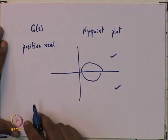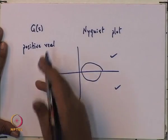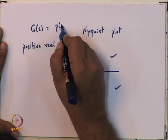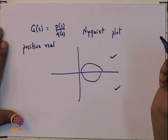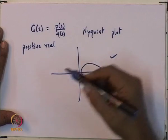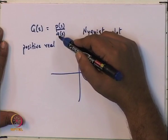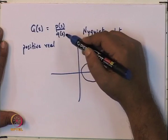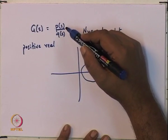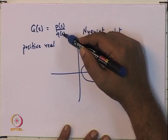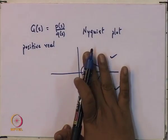This is the single input single output case, so G is some polynomial divided by some other polynomial. Now if you look at the theory of the Nyquist criterion, you know that if the relative degree — that means if P is a degree 3 polynomial and Q is a degree 4 polynomial, then the relative degree is 1 — only if the relative degree is 1 or 0 can you expect to have the Nyquist plot restricted to this half.